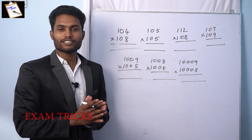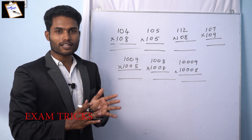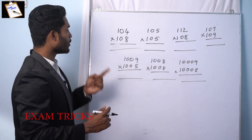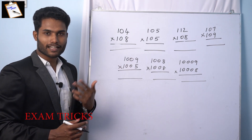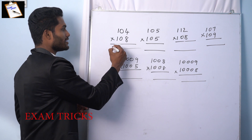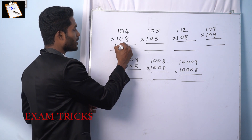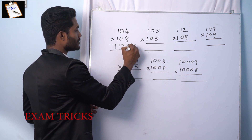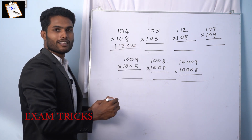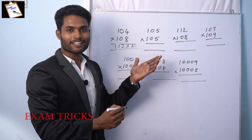Multiplication of 104 into 108. 1 second, 2 seconds, 1 second — the answer in about 3 seconds.